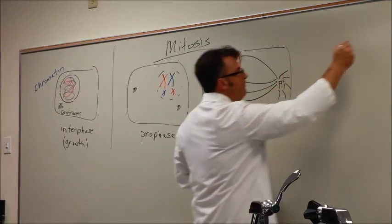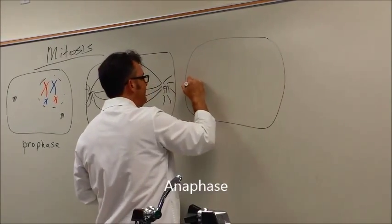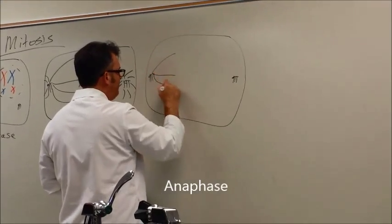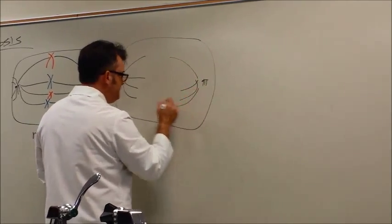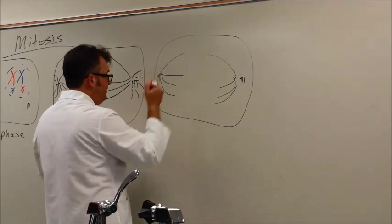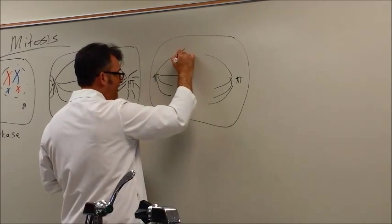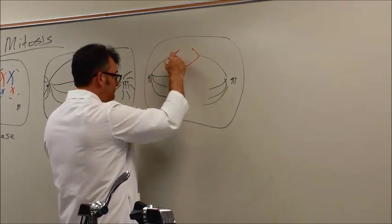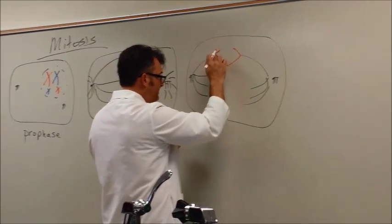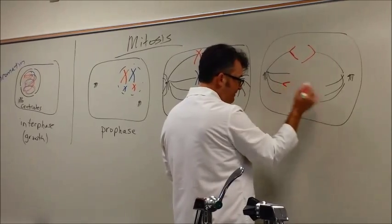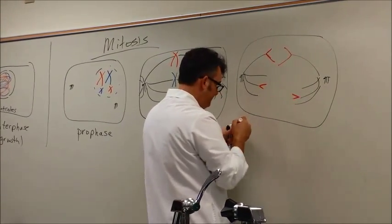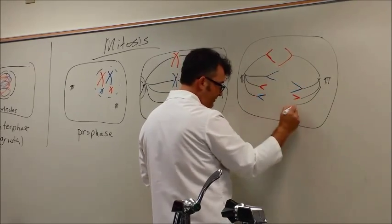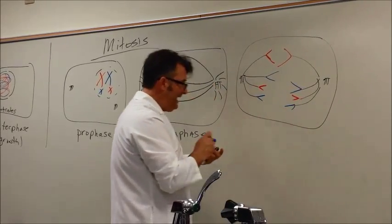The next step is called anaphase. In this phase, the centrioles are pulling apart these chromosomes. The chromosomes pull apart. We have sister chromatids being pulled apart. We have a big red and a baby red being pulled apart, and a big blue and a baby blue being pulled apart. This is called anaphase.